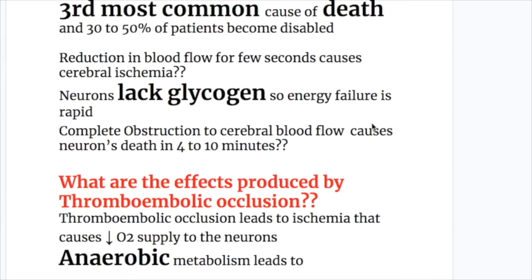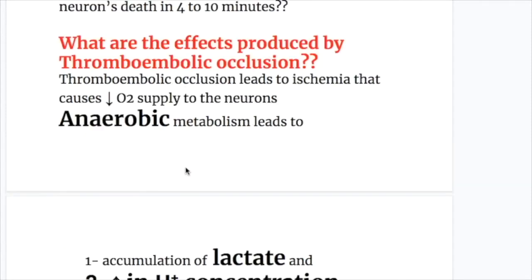Reduction in blood flow for a few seconds causes cerebral ischemia. Why? Because neurons lack glycogen, so energy failure is rapid. Complete obstruction to cerebral blood flow causes neuronal death in 4 to 10 minutes.